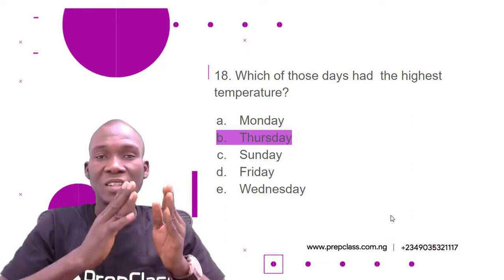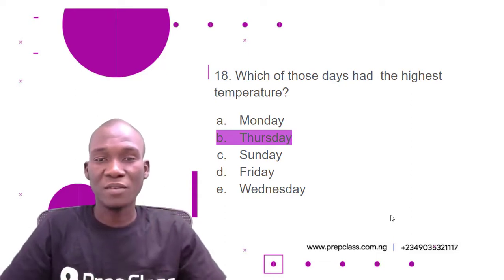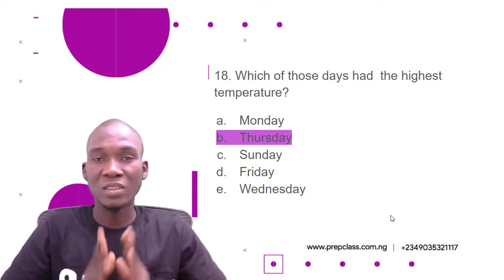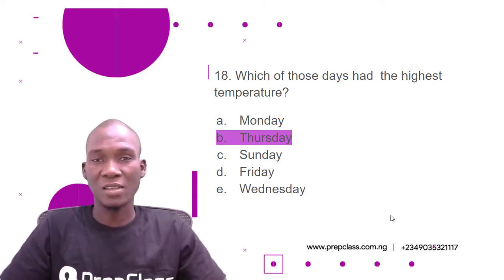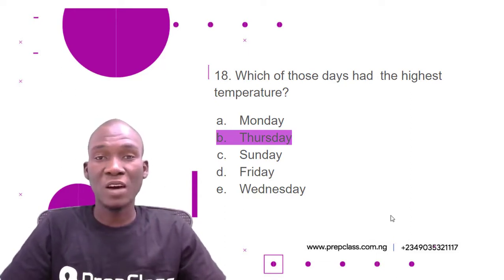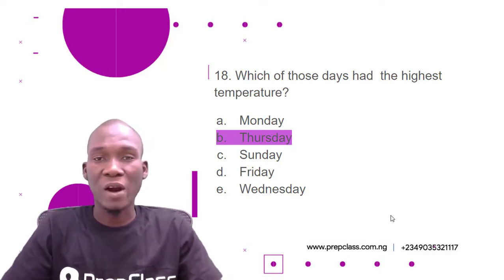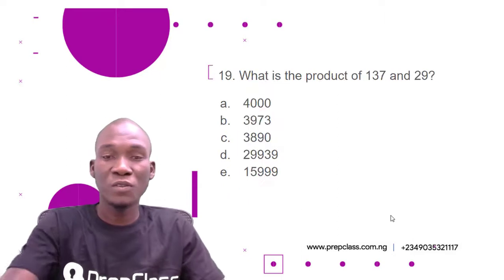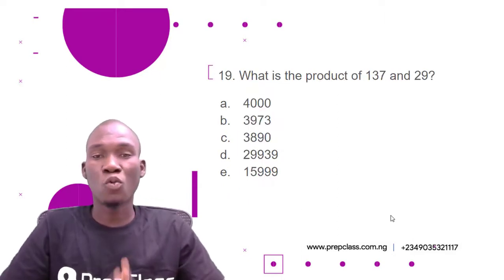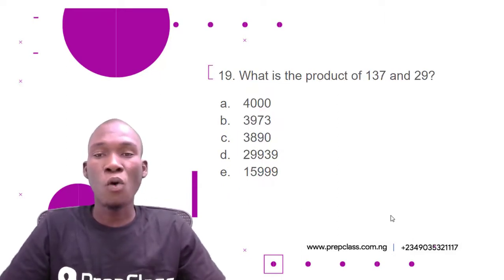That's how you answer questions from a graph — you just look at the graph and pick the right answer. There is no calculation needed; just read the graph and select the correct option. Now we move to the next question, question number 19.